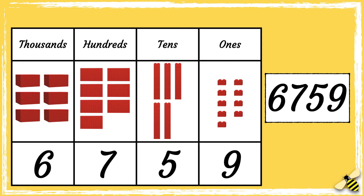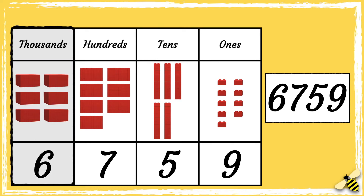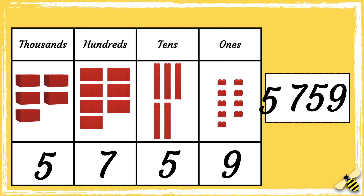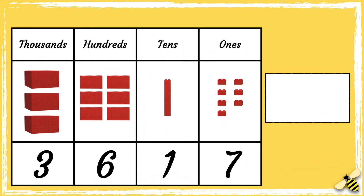Now let's have a look at a thousand less. Here is the number six thousand seven hundred and fifty nine. When we take away a thousand from a number, we need to look at the thousands column. Six thousands becomes five thousands, so the new number is five thousand seven hundred and fifty nine.